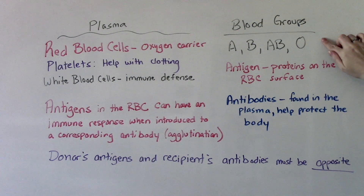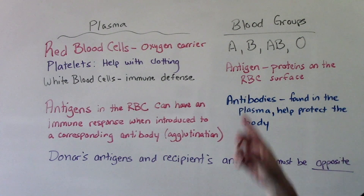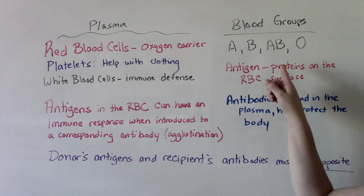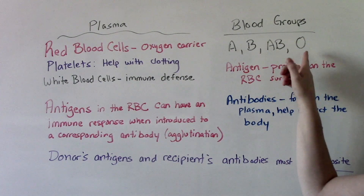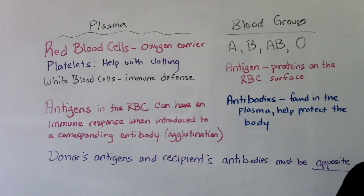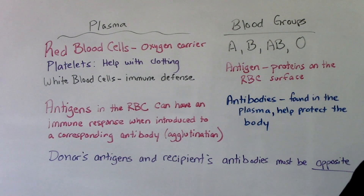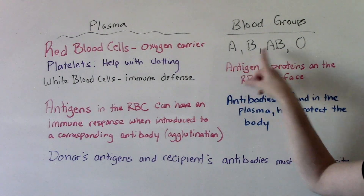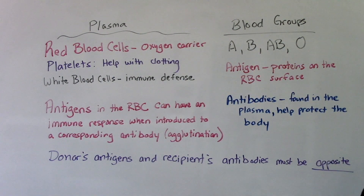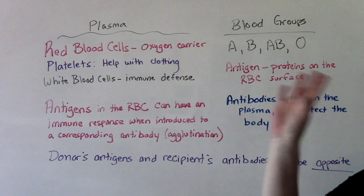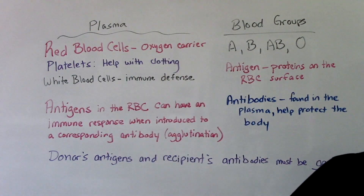There are actually four blood groups: A, B, AB, and O, and then eight blood types. So when somebody says, what's your blood type? You would usually say A positive or A negative. That is a combination of the blood group and your Rh factor, which we'll talk about later on in this video.